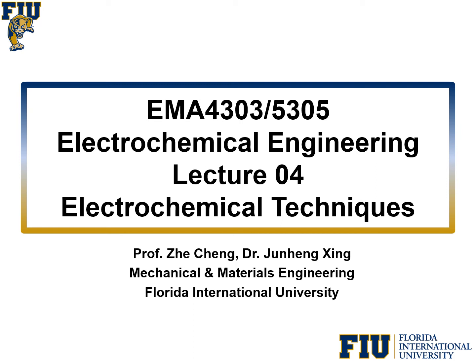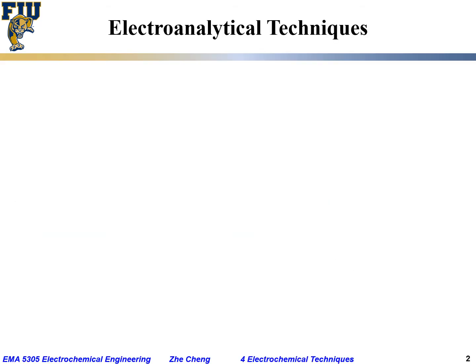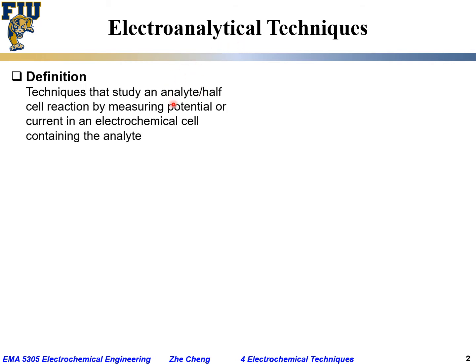From today we will go into lecture four: electrochemical techniques. These are techniques used for electrochemistry or electrochemical engineering to help us understand electrode reactions or an analyte. Electrochemical techniques, sometimes called electro-analytical techniques, are techniques that study an analyte — a species of interest — or a particular half-cell reaction, whether oxidative or reductive, by measuring the potential or current in an electrochemical cell containing that analyte or half-cell reaction.